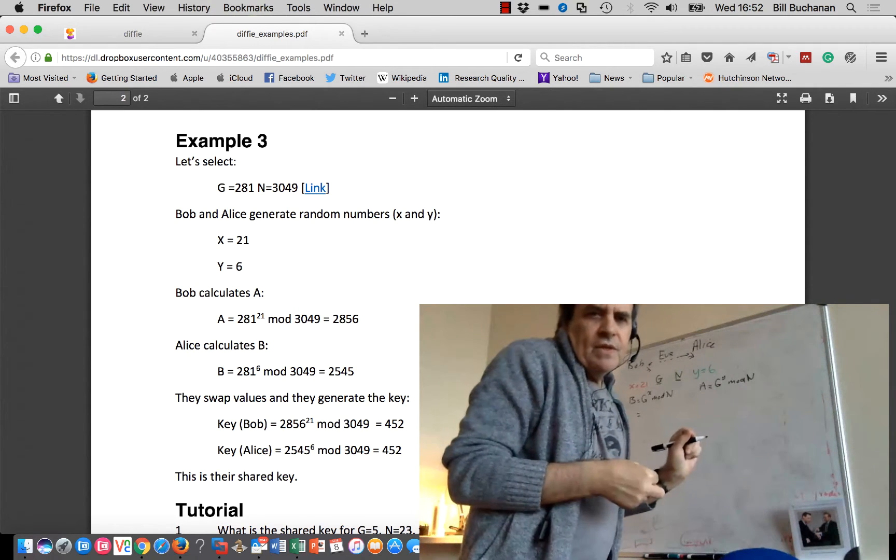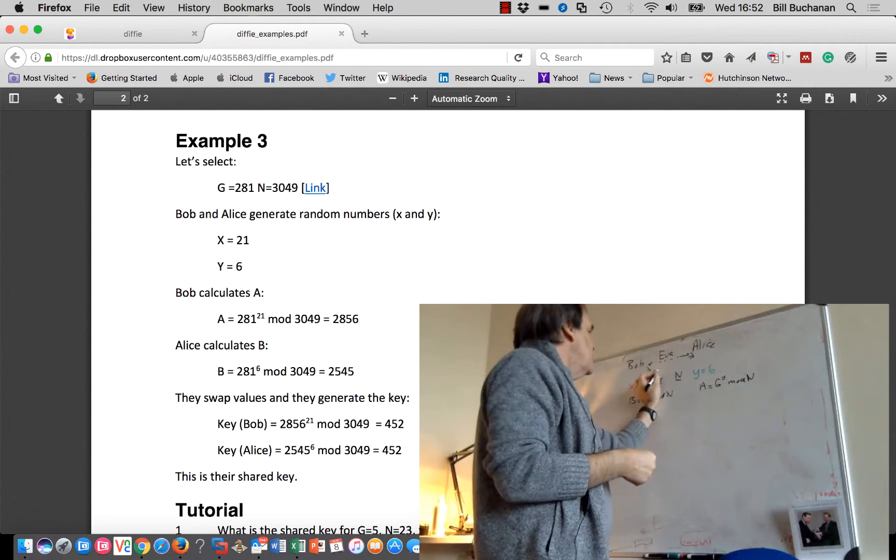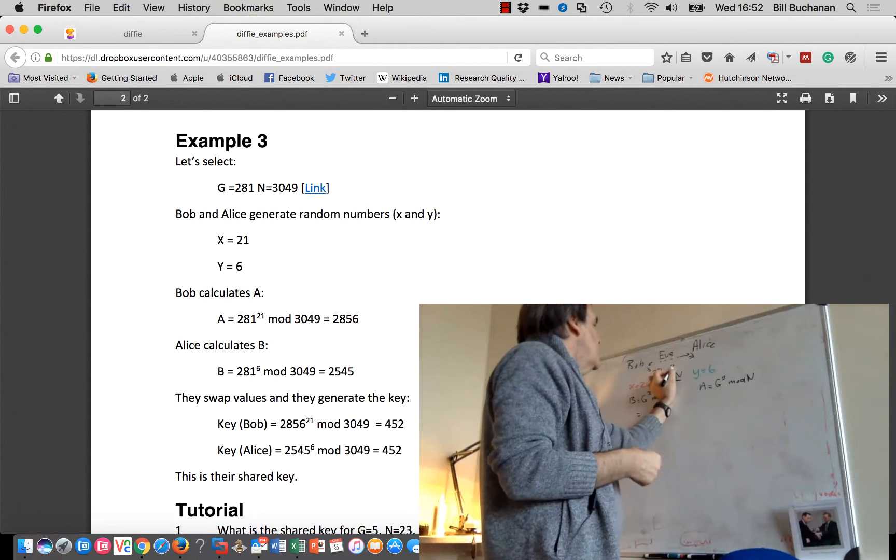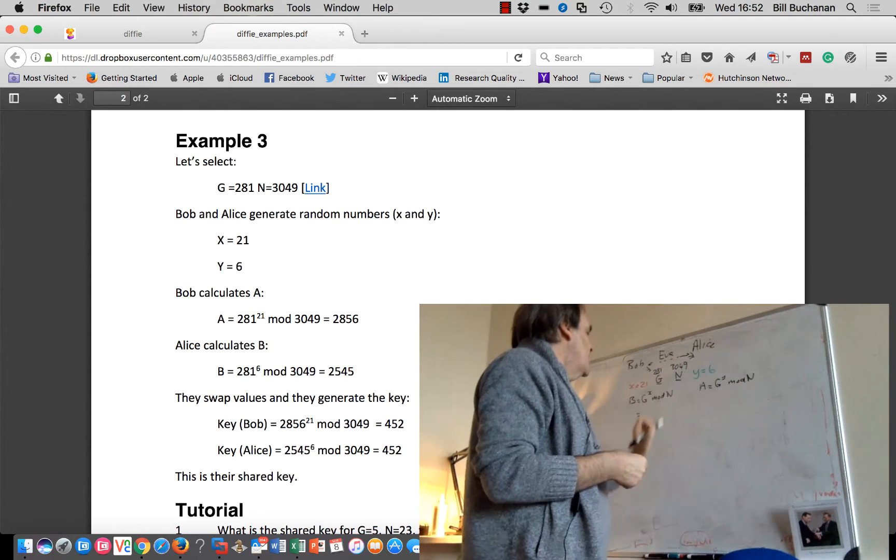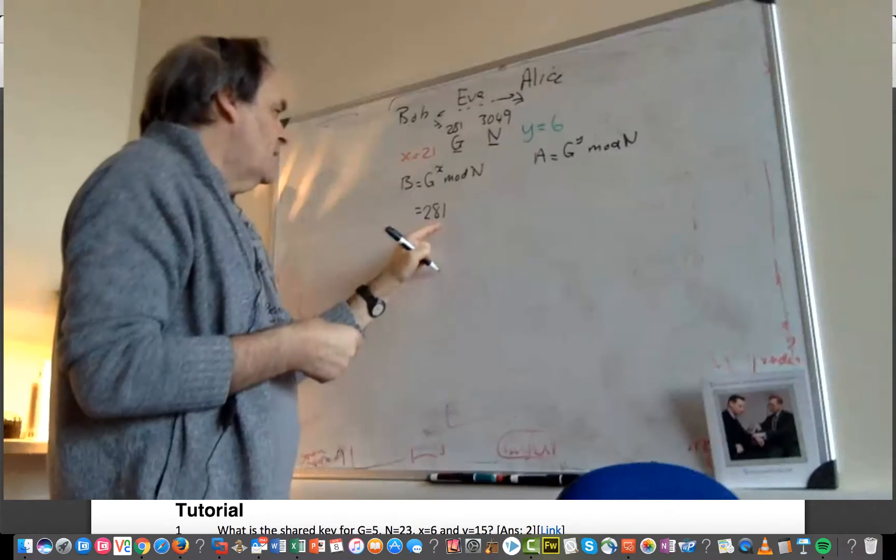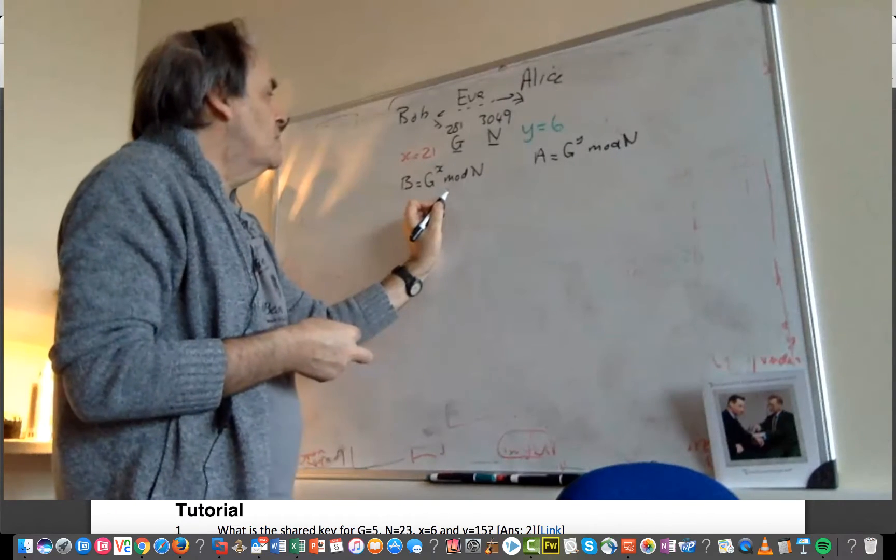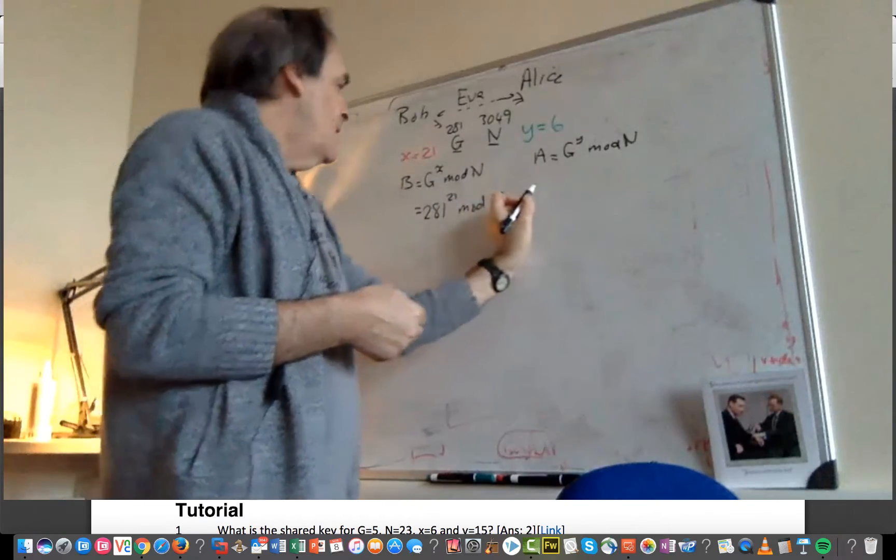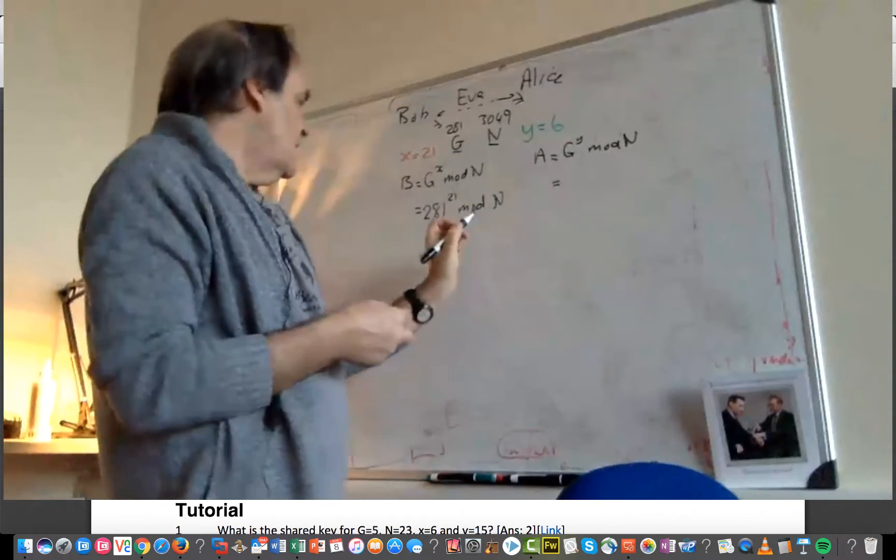So we'll just try that out. So the G value we're going to use in this case is 281, and the N is 3049. So we take 281 and raise it to the power of X, which is 21, mod N.